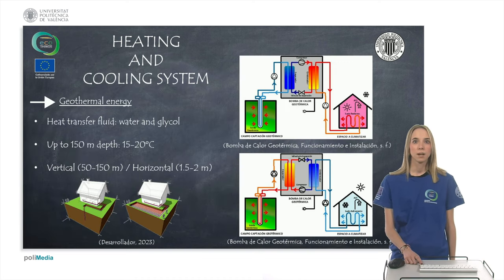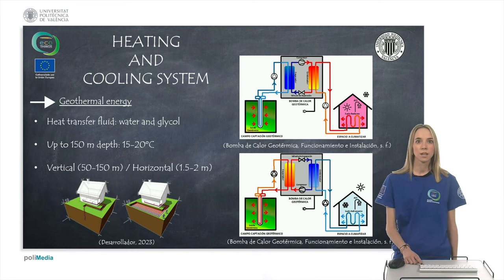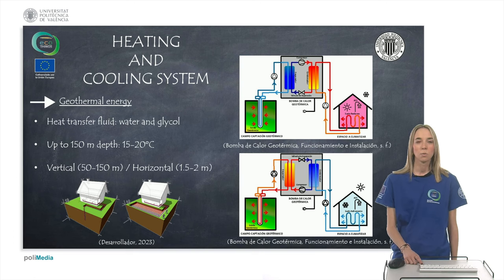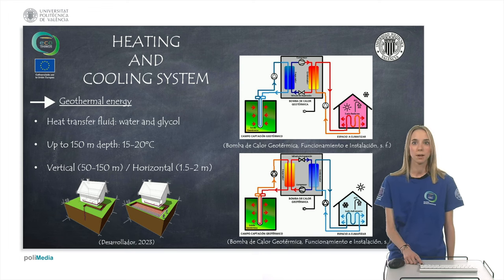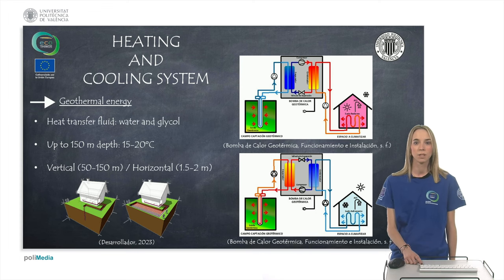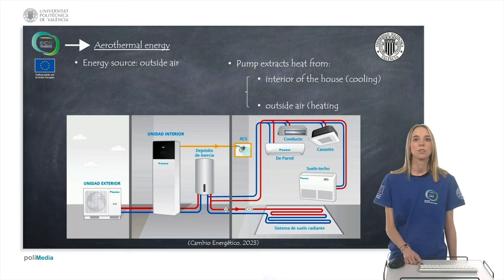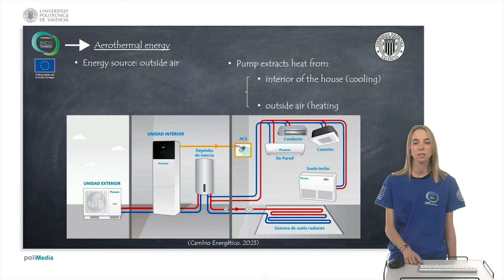The passive house concept covers many fields, but this project has focused on the heating and cooling system. There are two types of heating and cooling systems that use renewable energy sources which were considered for the prototype. On one hand, geothermal energy involves harnessing heat from the ground. On the other hand, aerothermal energy follows the same process as geothermal energy, but the energy source used is the outside air.